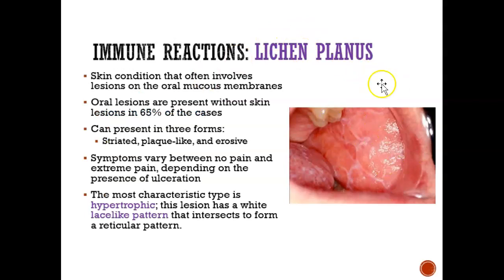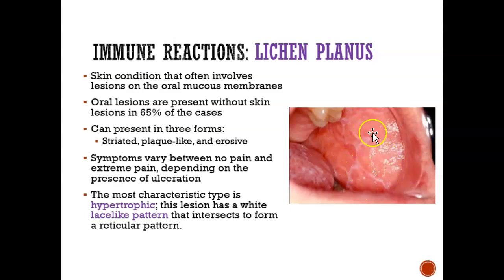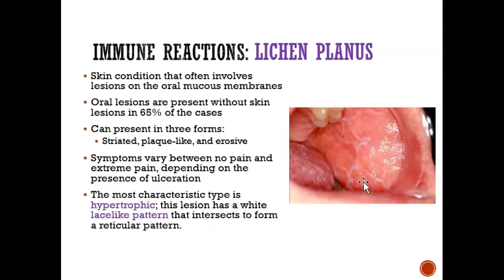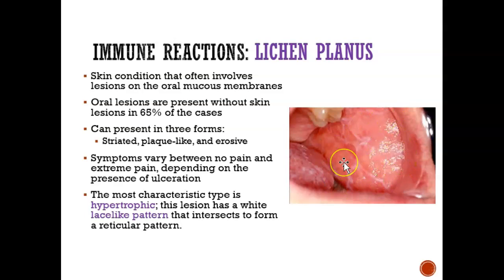Lichen planus is another type of lesion. It's basically a white lace-like pattern type of lesion. When it has a lace-like pattern, we say it's hypertrophic — that's how we identify it. As for pain, it depends. Sometimes people will have this and have no pain, and sometimes people will be in extreme pain, especially if this is a lot more significant.